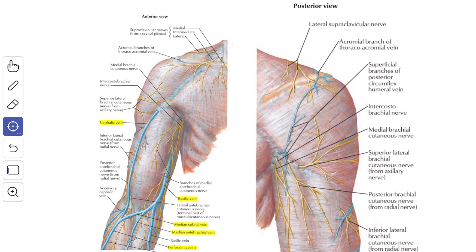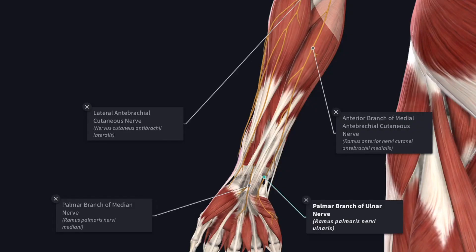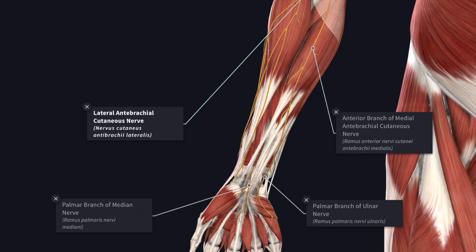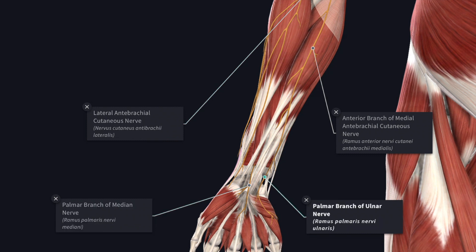In addition, the back of the arm is also supplied by the nerves from the front of the arm. The front of the forearm is supplied by the medial cutaneous nerve of forearm and the lateral cutaneous nerve of forearm, and also by the palmar cutaneous branches of the median and ulnar nerves close to the wrist.